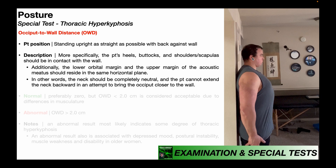Finally, the neck should be completely neutral, and the patient cannot extend the neck backward in an attempt to bring the occiput closer to the wall. The neck needs to be neutral, as you see right here. Tilting the head backward to get it closer would be a compensation and make the test invalid.